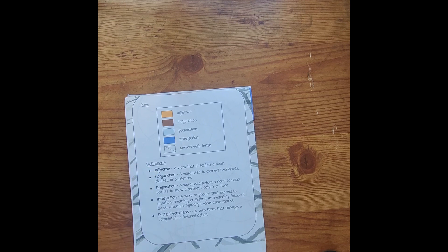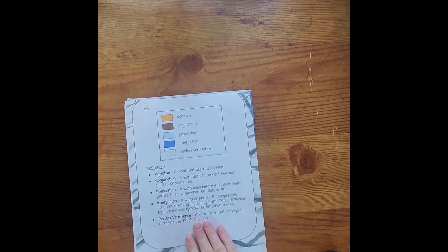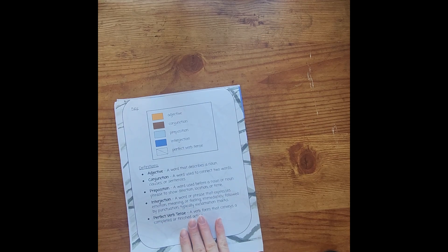You'll see the definitions below and they can reference those definitions as much as they need to. You can see: adjective, a word that describes a noun; conjunction, a word used to connect two words, clauses, or sentences; preposition, a word used before a noun or noun phrase to show direction, location, or time; interjection, a word or phrase that expresses emotion, meaning, or feeling immediately followed by punctuation, typically exclamation marks; and then the perfect verb tense, a verb form that conveys a completed or finished action. So they have those definitions at their fingertips to use while they're working on this.